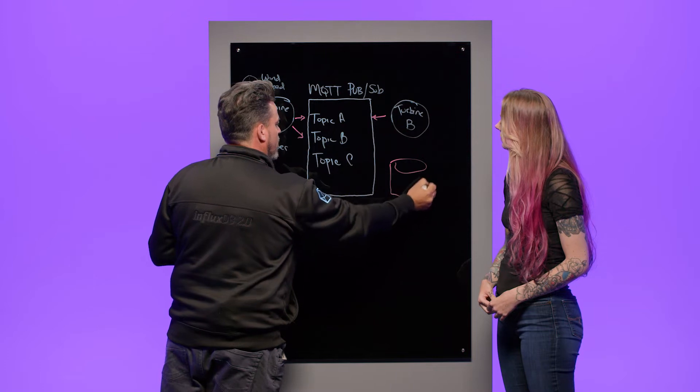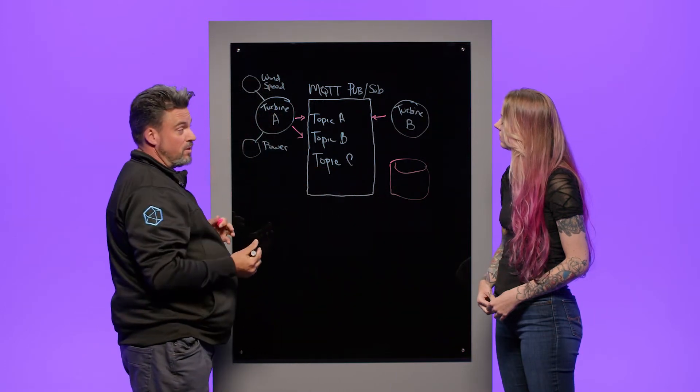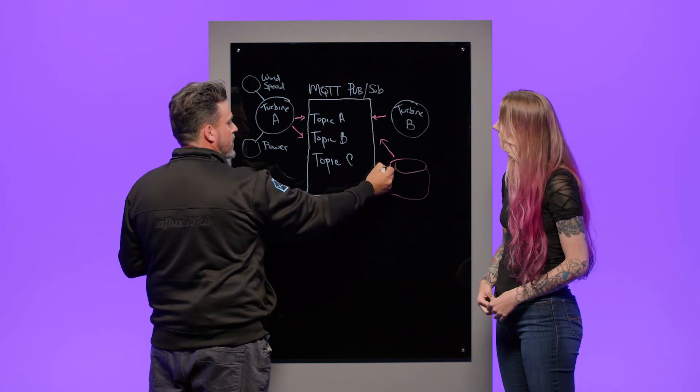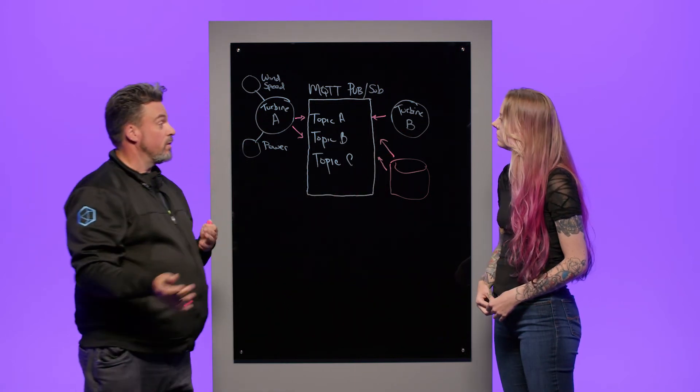It's cool because it's in two ways. Number one, there isn't a great sort of persistence strategy for MQTT. So you can always sort of sit InfluxDB right next to your MQTT broker, and it, just like a turbine, can subscribe to any of those topics just as if it was another machine.